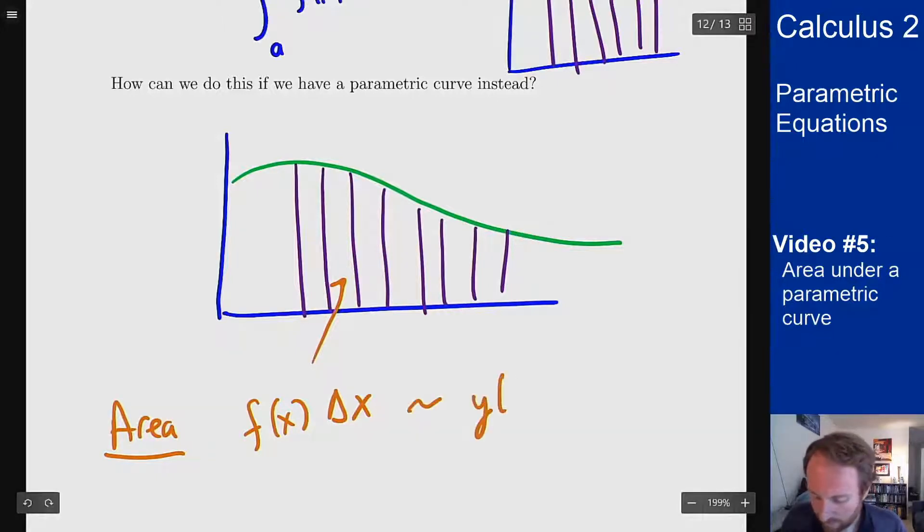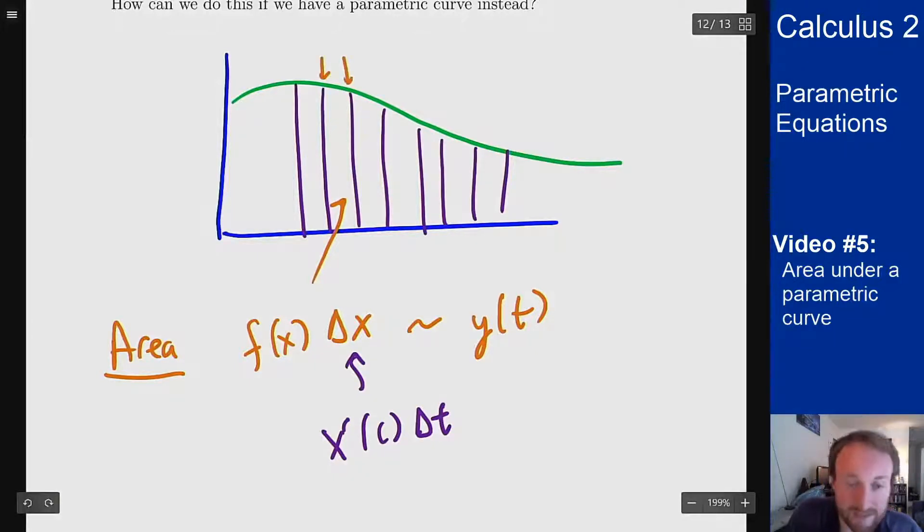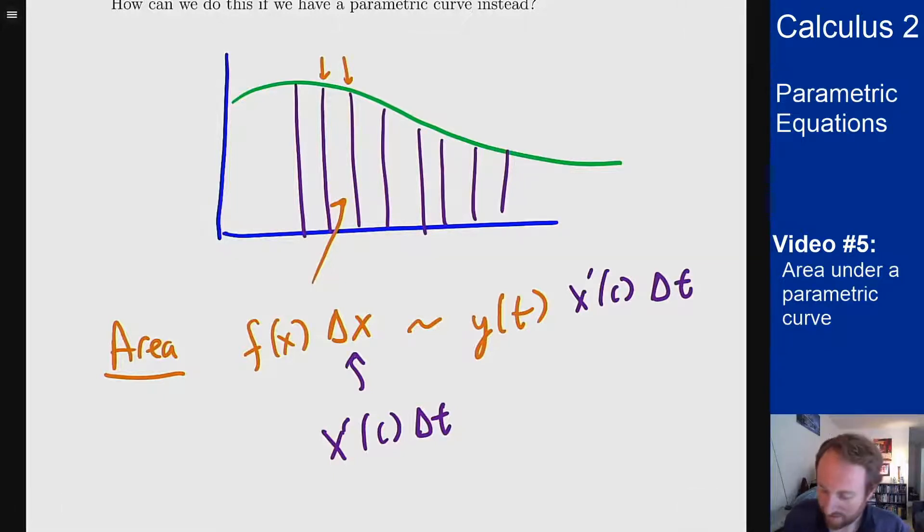This becomes a y value here at some point t. And what's delta x? Well for the delta x we're going to apply the same trick we did for tangent lines. The delta x I can represent as x prime at some c times an appropriate change in t. So I can use these different x values here and figure out what the t values are for them, and convert this delta x into a delta t. So this should then be a y prime times an x prime at some c times a delta t. And when I take the limit, this c becomes a t because now everything's squished down as a width of zero.